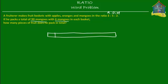If this is one set of fruit, then this is one set of apples, two sets of apples, and three sets of apples. So he packs three sets of apples. Then he packs five sets of oranges — 1, 2, 3, 4, and 5. And lastly, he packs two sets of mangoes, 1 and 2. And this is one basket.